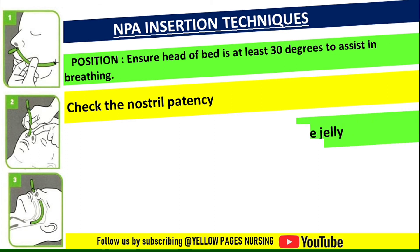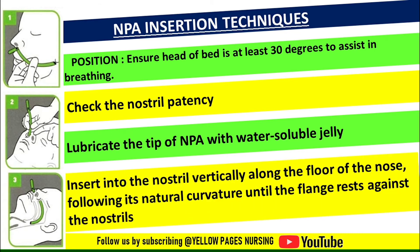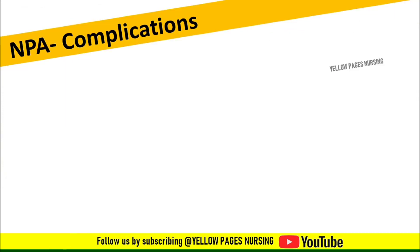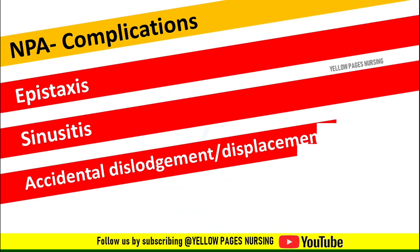Lubricate the tip of the nasopharyngeal airway with water-soluble jelly. Elevate the tip of the nose with a finger, then insert the nasopharyngeal airway into the nostril vertically along the floor of the nose, following its natural curvature, until the flange rests against the nostrils.